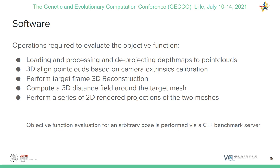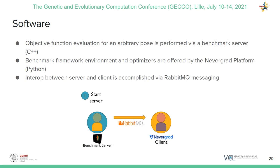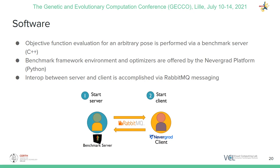And another term penalizes implausible human poses. To evaluate the objective function, we need to load and process depth maps of the captured performance, align the per-viewpoint point clouds to the same coordinate frame, 3D reconstruct the target mesh, compute a 3D distance field around the target mesh for efficient template-to-target mesh distance evaluation, and perform a series of 2D rendered projections of the two meshes to compute their silhouette difference. All those operations are implemented in a C++ software component called the Benchmark Server. While the Benchmark Server offers objective function evaluations, on the Python side, NeverGrad provides the benchmark framework and the optimizers to solve the template fitting problem. Interop between the two is accomplished via RabbitMQ messaging.